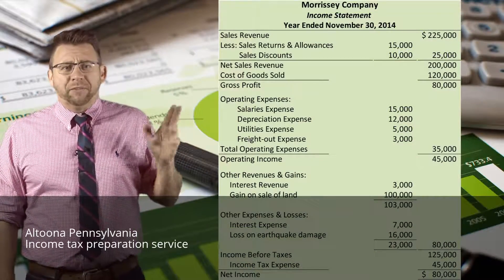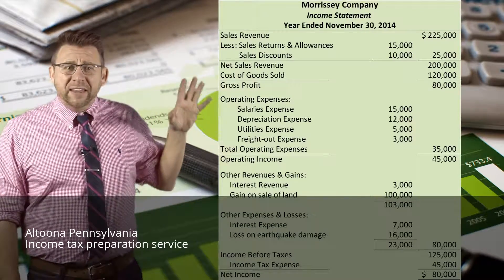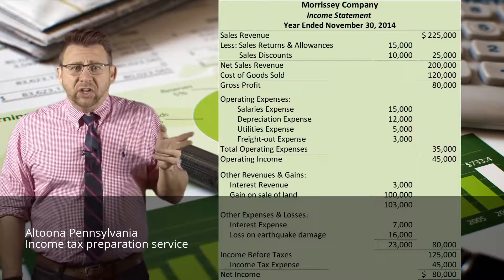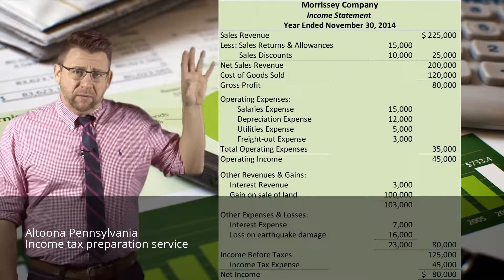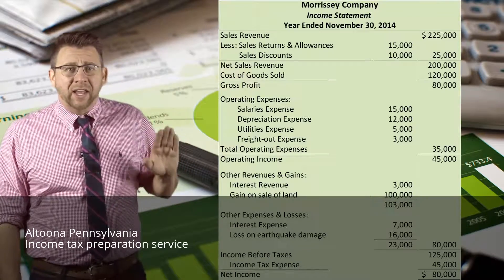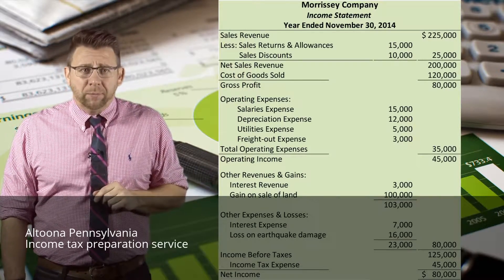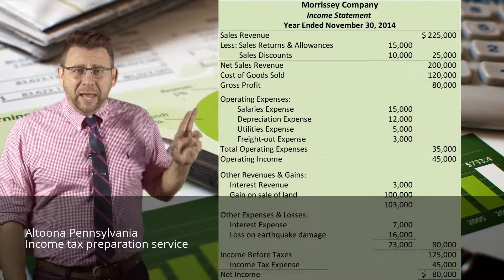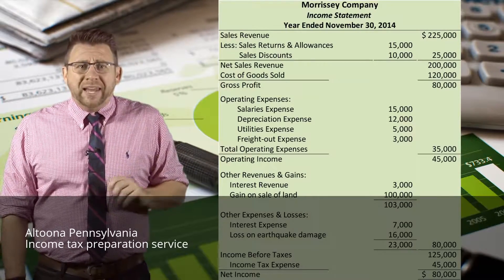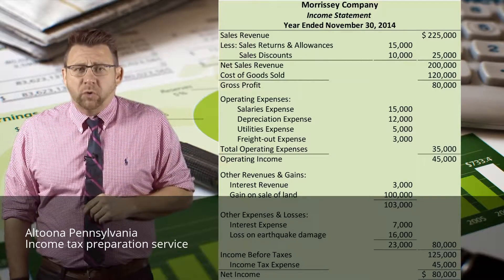Here is an example of the multi-step income statement. You can see the different subtotals listed. You will see items on an inner column being subtotaled and then that amount being carried to the outer column — again, that does not mean debit or credit, so please remember that. Now let's look at the multi-step income statement more closely.